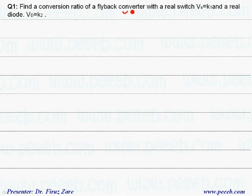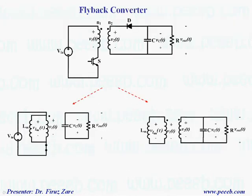In this example, we have a flyback converter with a real switch and a real diode, and we're looking to find the conversion ratio. If you look at this circuit diagram, we have a voltage drop across the switch when the switch is on, and also a voltage drop across the diode when it conducts.